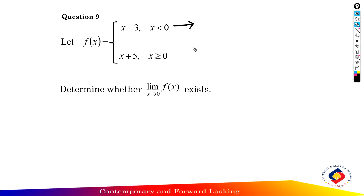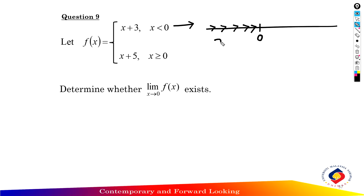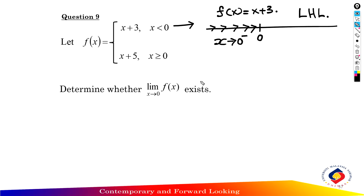We get a different value if we're coming at 0 from the left of the function. Drawing the number line, x is approaching 0 from the left, and the function f(x) equals x plus 3. So here is the left hand limit of the function.